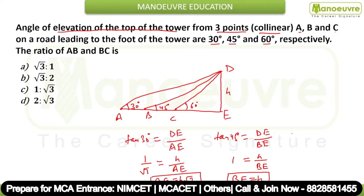The third one is tan 60 degrees. Tan 60 equals DE upon CE. Tan 60 is root 3, so root 3 equals H upon CE. Therefore CE equals H upon root 3.